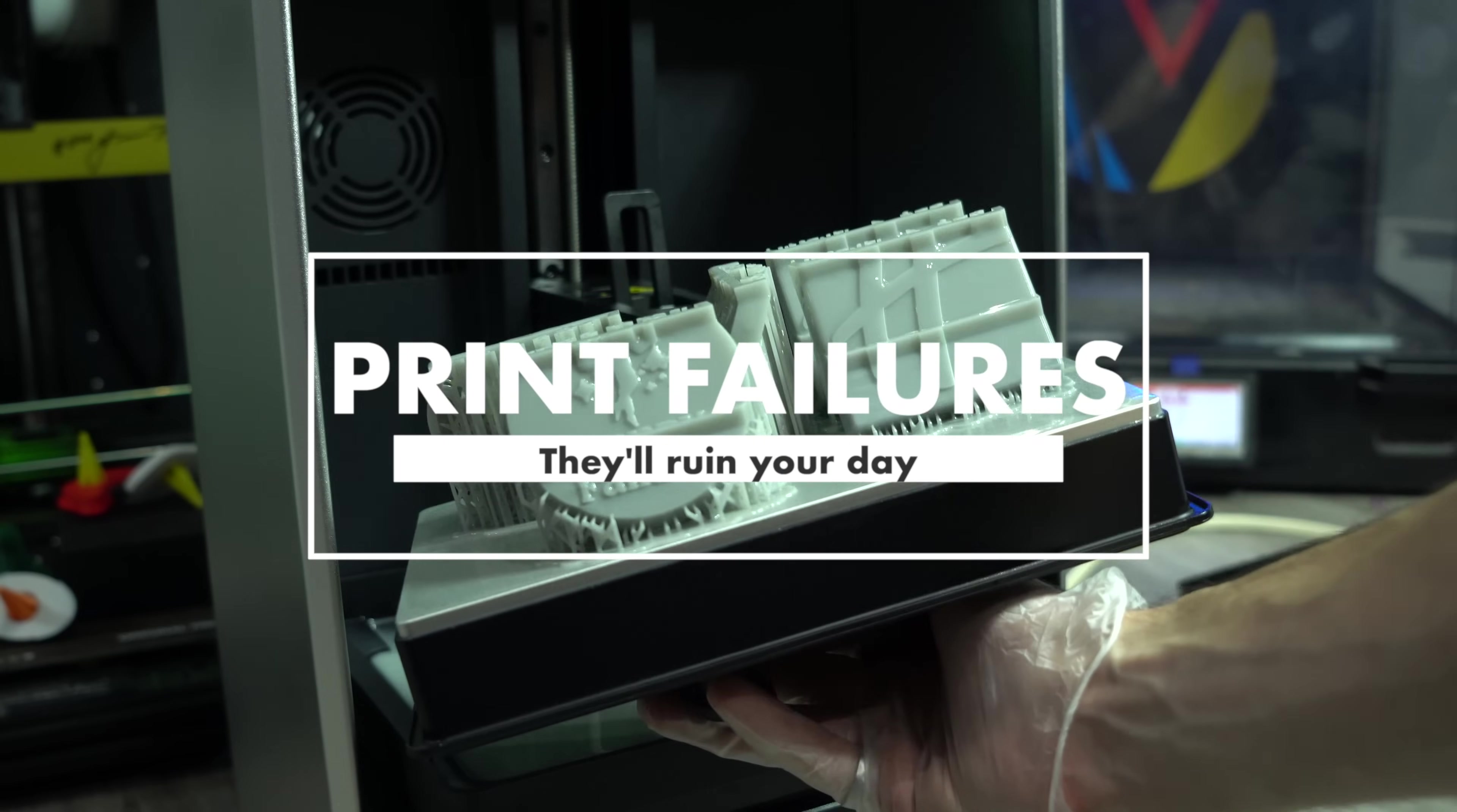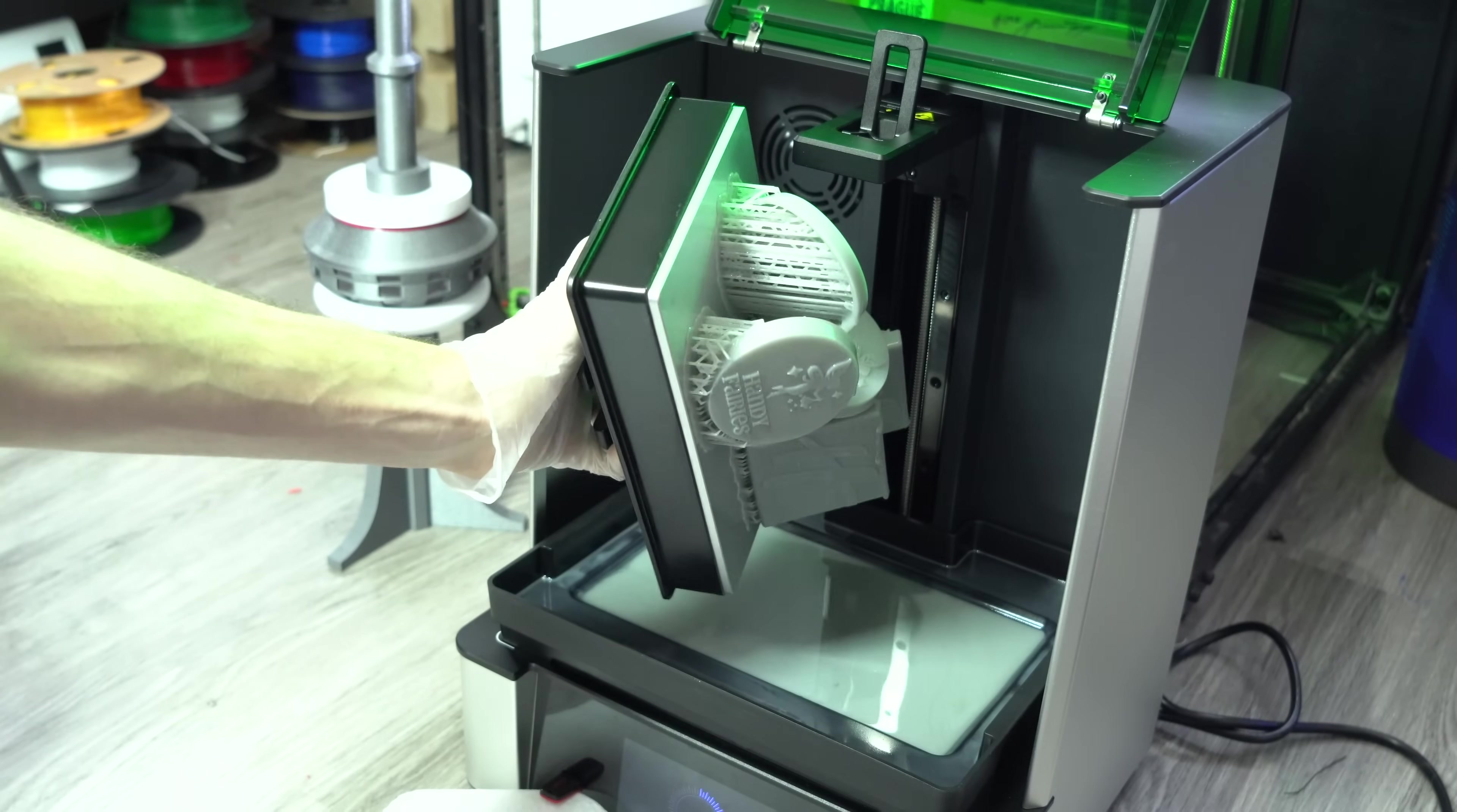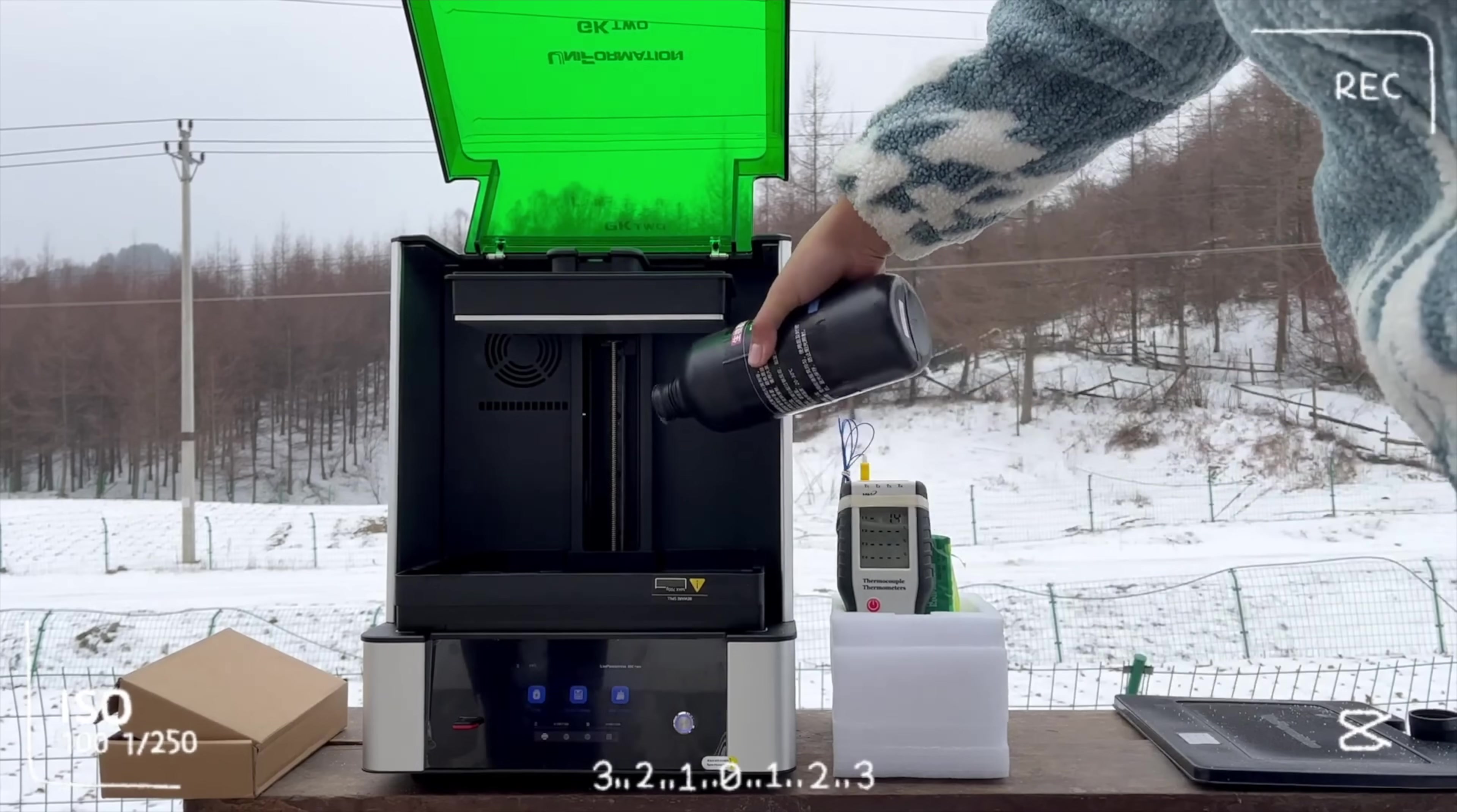Print failures. In this department, the two biggest benefits of the GK2 are the N-FEP and the vat heater. The N-FEP reduces suction force, mitigating the risk of prints detaching from their supports. The vat heater keeps the resin at optimal printing temperature, reducing the likelihood of layer separation due to undercuring. This has the added benefit of allowing the printer to be used in environments with low ambient temperatures.